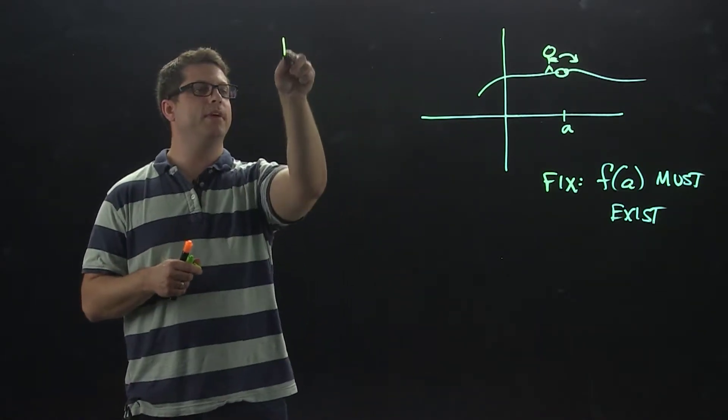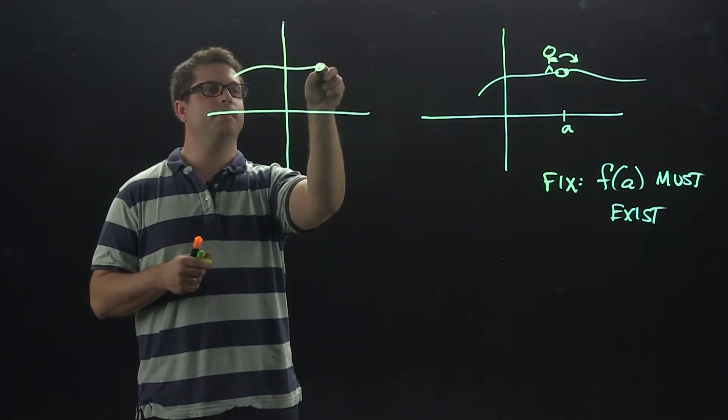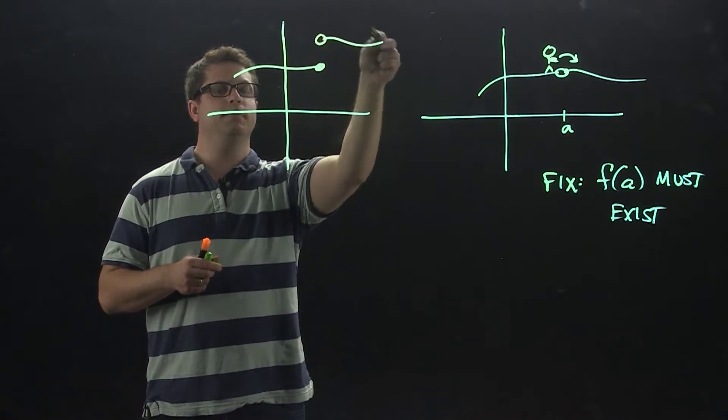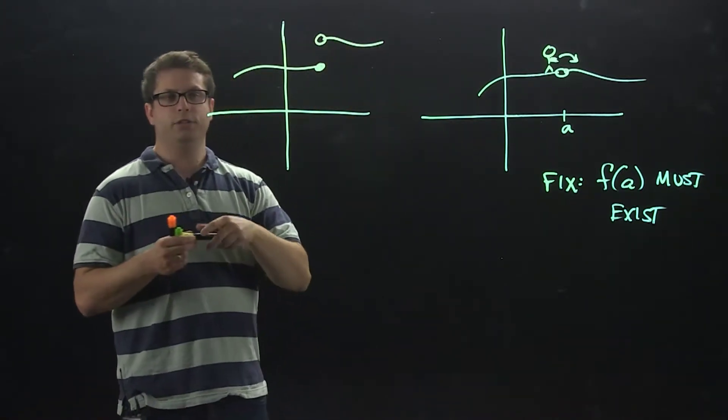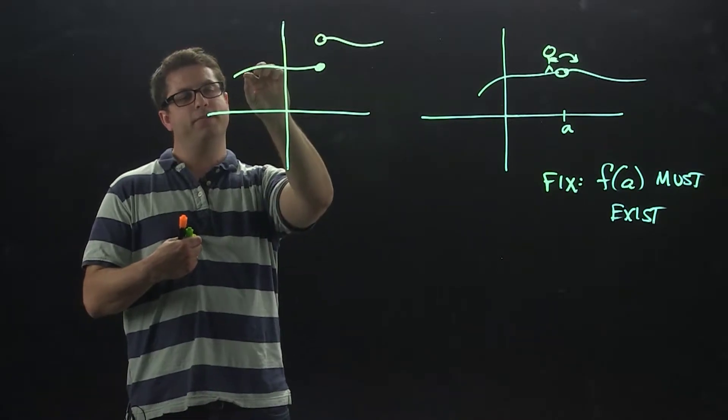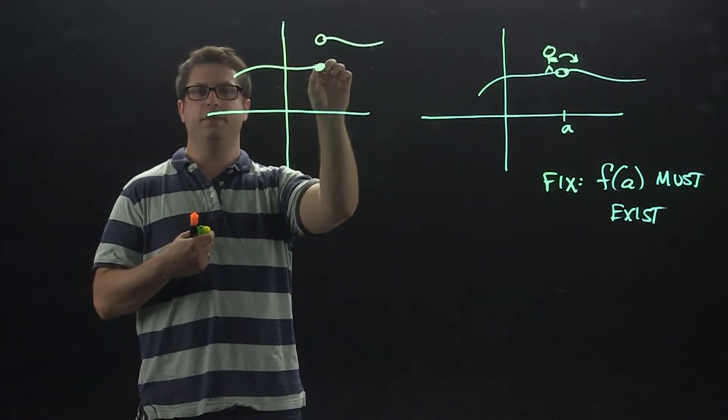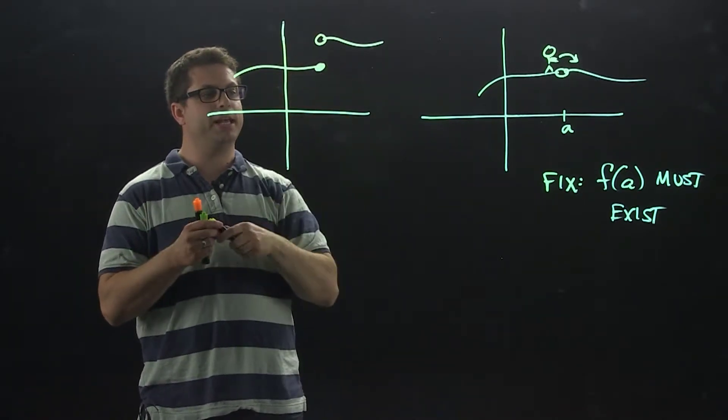I now tell you that f of a must exist. Here we go. Except now, I'm going to do something like that. Using the algebra definition of continuity, where I have to lift my pencil up and if I do, I'm not continuous. Definitely happens here.